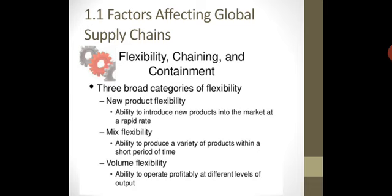At different levels of output — second level, third level, fourth level — you have to operate. You don't need to always operate at the optimum level. You may have to produce less production based on market demand or any external macro factors, like political stability or economic stability mentioned in the previous lecture. If your supply chain is flexible enough, you can produce different volumes at different levels of output.